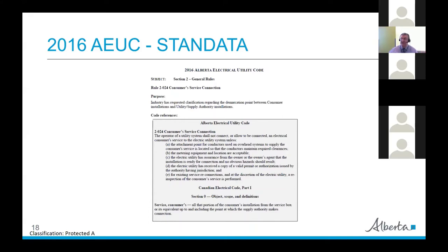In order to meet all the requirements, you need to know where the demarcation point or points are, so everybody knows which code regulates which portion. It can't be regulated by both — each portion of an electrical installation is either regulated by Part 1 or the utility code. If you have any questions about where that demarcation point is, the first person to ask is the Safety Codes Officers on both sides of it.